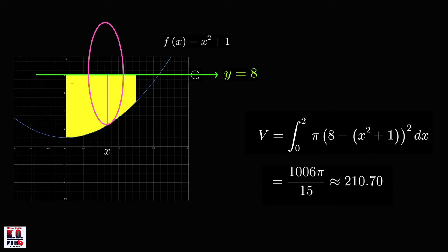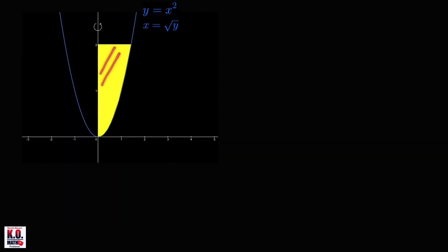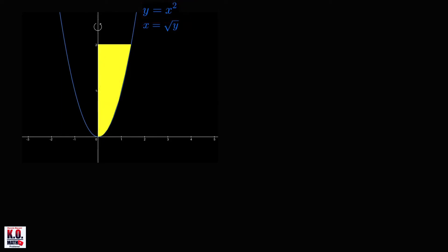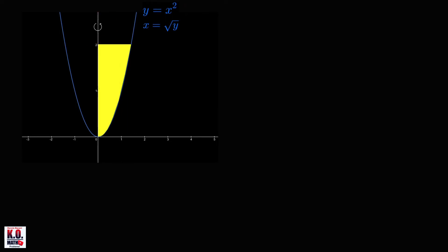Next, let us consider solids of revolution where the axis of rotation is a vertical line. Consider the region bounded on the right by y equals x squared and the y-axis, over the interval 0 to 2. We want the volume when this region is revolved about the y-axis. The key difference is that the components x and y are interchanged, so we integrate with respect to y.